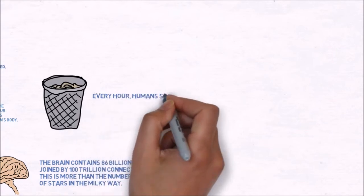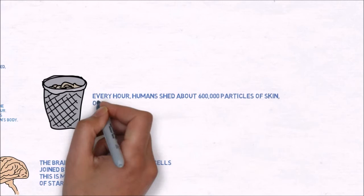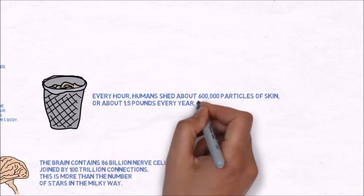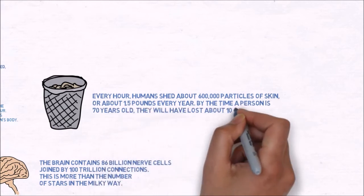Every hour, humans shed about 600,000 particles of skin, or about 1.5 pounds every year. By the time a person is 70 years old, they will have lost about 105 pounds of skin.